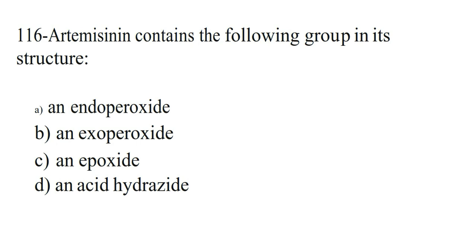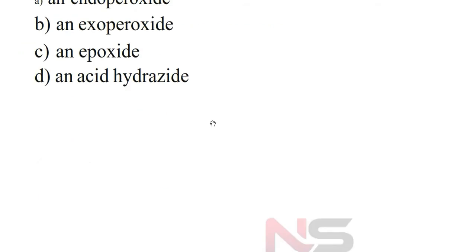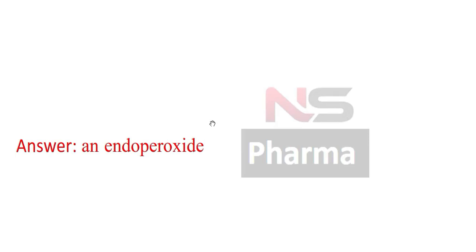Next question. Artemisinin contains the following group in its structure: Option A. An endoperoxide. Option B. An exoperoxide. Option C. An epoxide. Option D. An acid hydroxide. Answer: An endoperoxide.